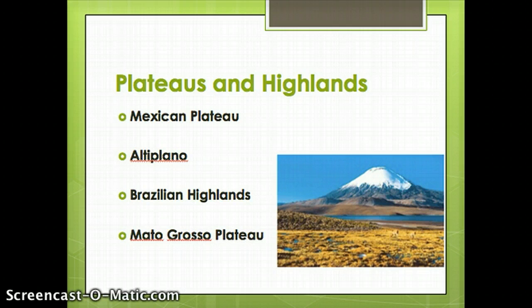We also have a variety of plateaus and highlands. Plateaus would be elevated, flat areas. Highlands would be mountainous areas not quite as high as mountain ranges, but higher in elevation. The Mexican Plateau is in between those two mountain ranges in Mexico, in between the Sierra Madre Occidental and the Sierra Madre Oriental Mountains.